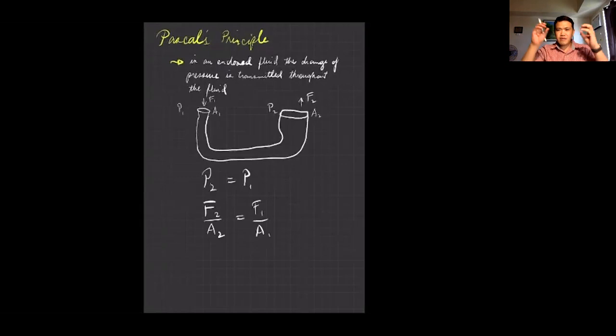Okay, between these two ends of the enclosed tube. So you can say f2 is equal to a2 over a1 times f1. So it depends on the ratio of areas.